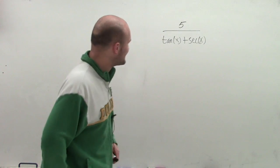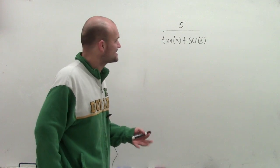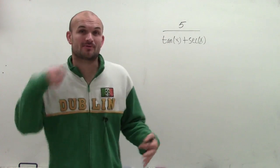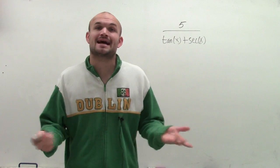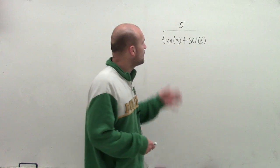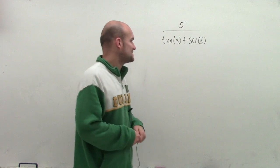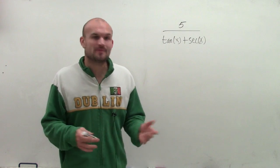I have 5 divided by tangent of x plus secant of x. What I want to do is rewrite this as not in fractional form. So I need to get the tangent of x plus secant of x off the bottom.